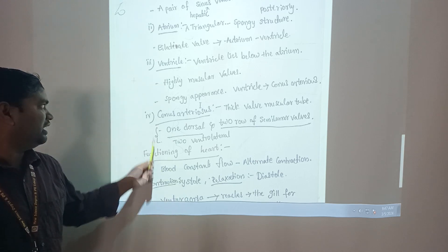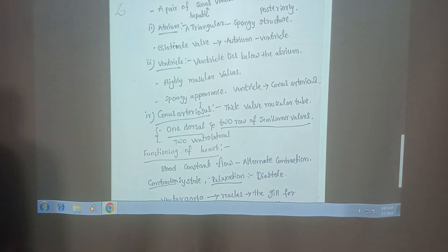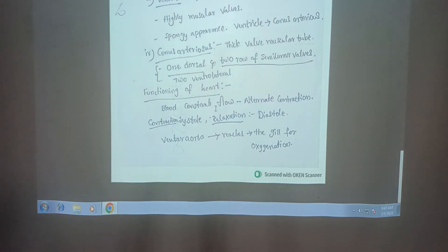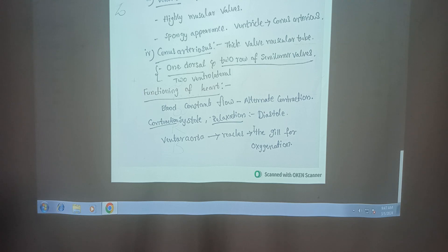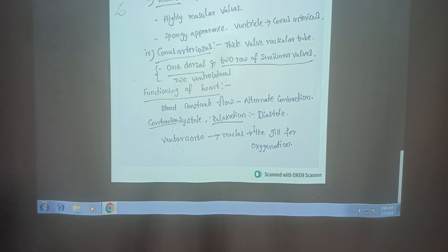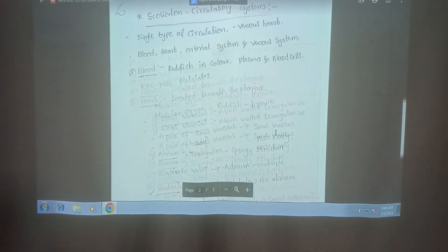The main function of the heart is to keep blood in constant flow by alternate contractions - systole and diastole. Systole is contraction and diastole is relaxation. The sinus venosus collects venous blood from all parts of the body through the duct of Cuvier and hepatic sinuses. When it contracts, blood flows into the atrium. Then the atrium contracts, and finally the powerful contraction of the ventricles pushes blood into the conus arteriosus, which then reaches the gills for oxygenation.